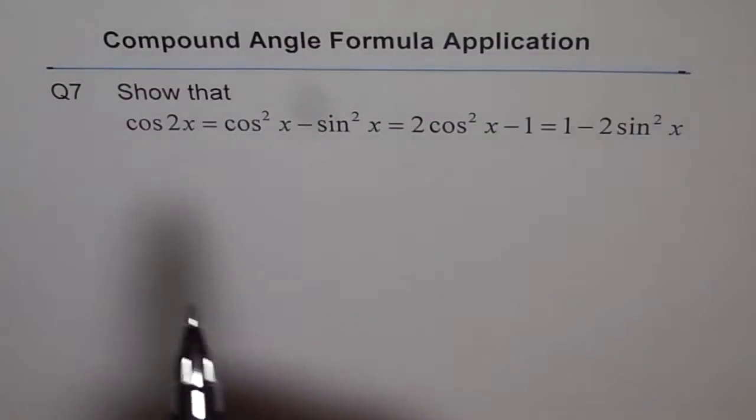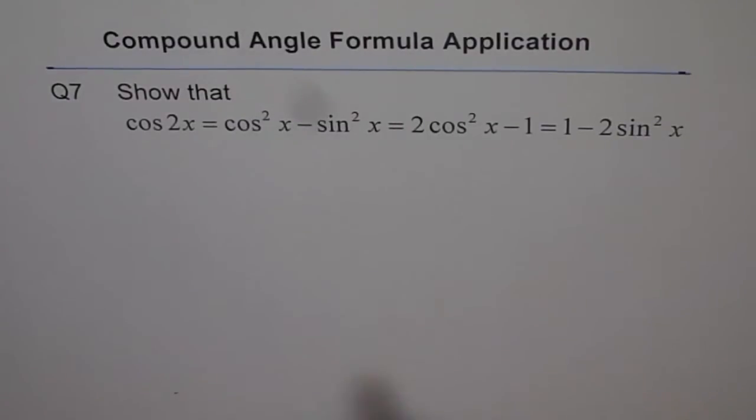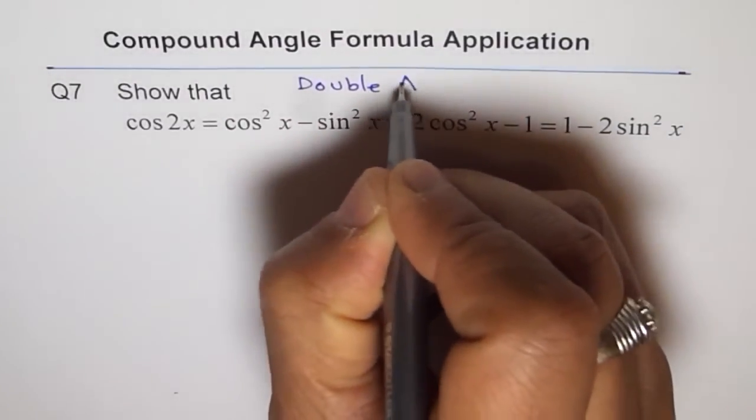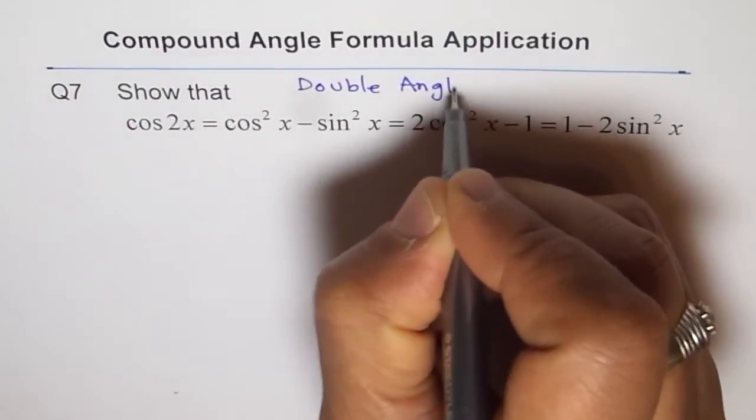cos 2x and sin 2x formulas are called the double angle formulas. Instead of x, we have 2x now. So remember these formulas as double angle formulas.